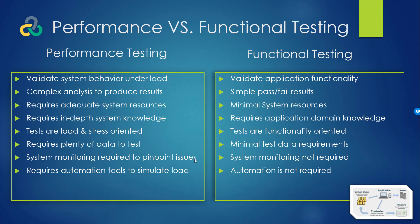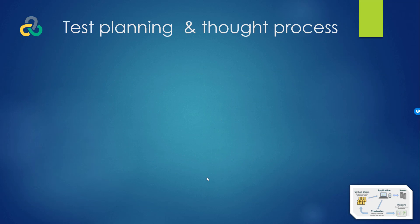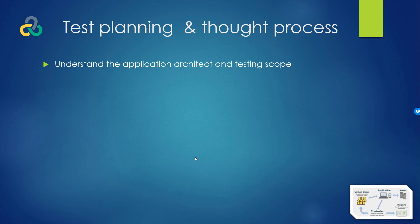Let's look at test planning and the thought process of how you go about planning a performance test — what tools and information you need. The very first thing you need is to understand the application architecture and testing scope. Nowadays applications are SOA-based or service-based, or they're talking to multiple systems like PeopleSoft, Salesforce, or homegrown tools. You need to understand what part of the application you'll be testing, what's in scope, what's out of scope, the architecture, number of application servers, load balancing, and number of databases.